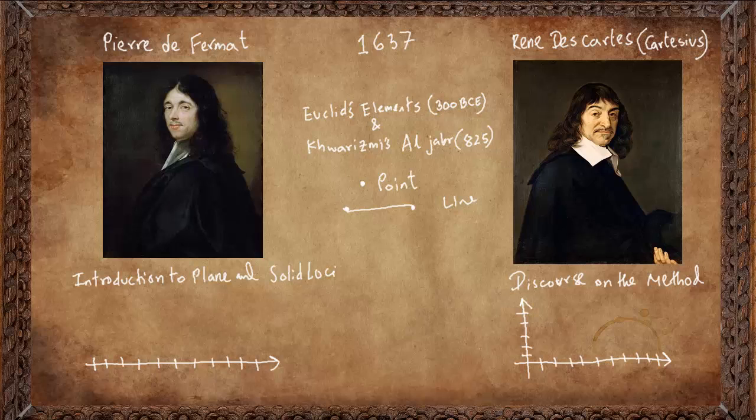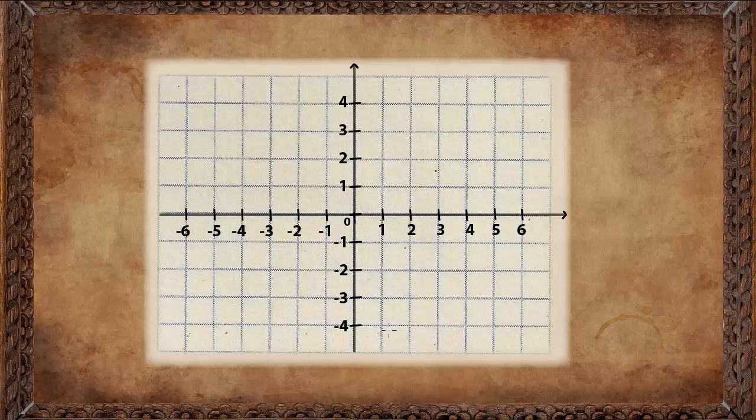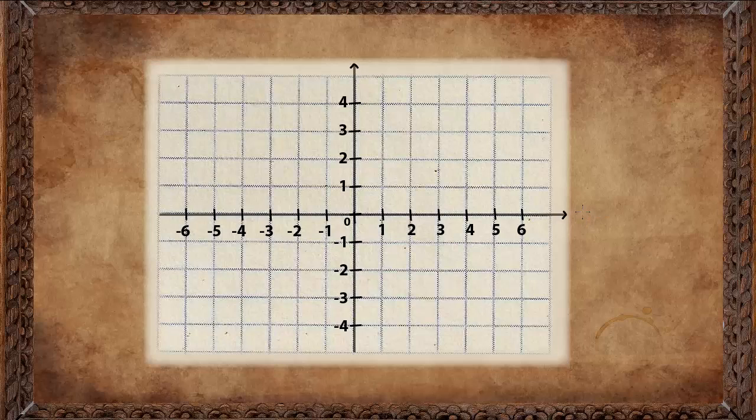René Descartes had another advantage. While Fermat used one number line, René Descartes came up with a brilliant idea of using two number lines. One horizontal and another vertical. So, the horizontal number line is called the X axis. The vertical number line is called the Y axis. Together, they meet at a point known as the origin. This plane that is formed would be called the Cartesian plane or the Cartesian coordinate system.